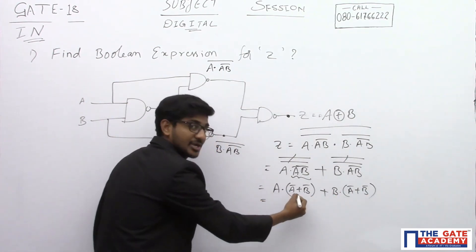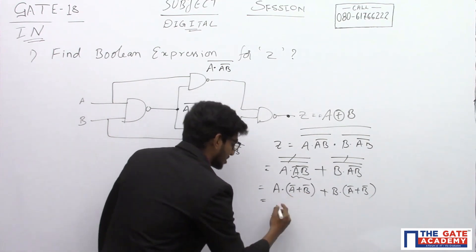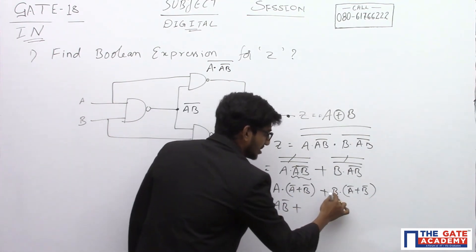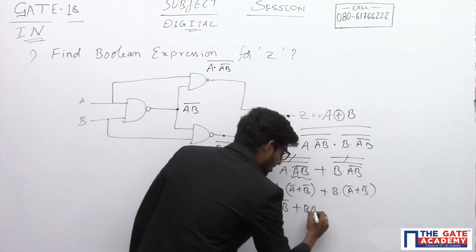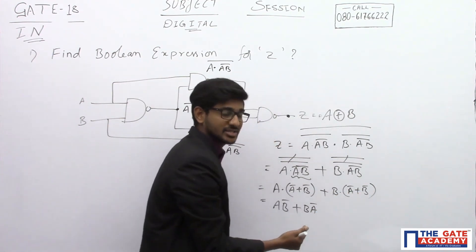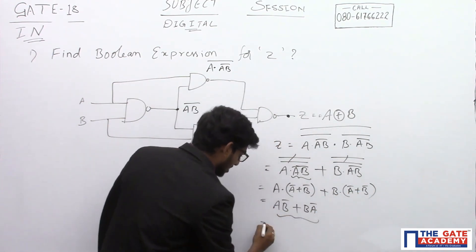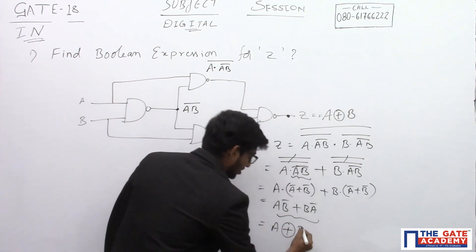Now, multiply A into A bar is 0. Another term is AB bar plus BA bar. Again, B into B bar is 0. So, this is nothing but A XOR B.